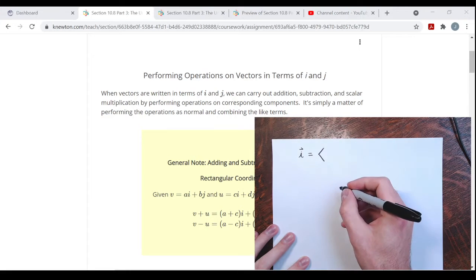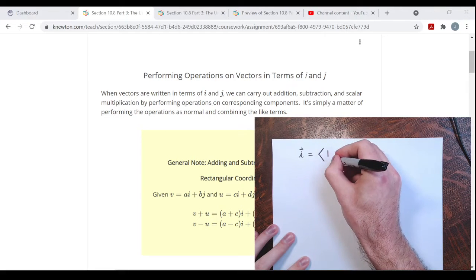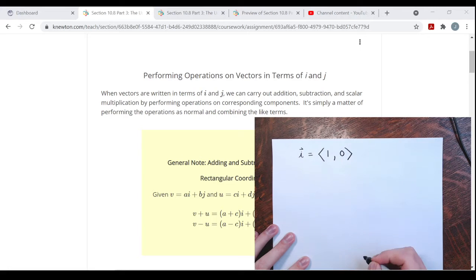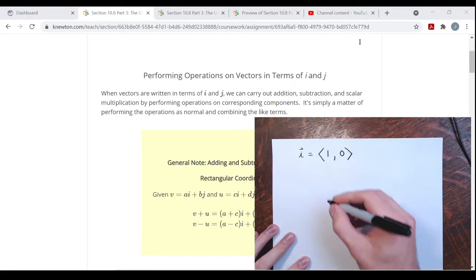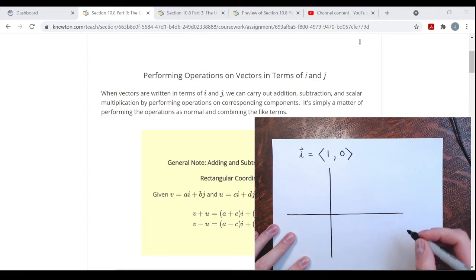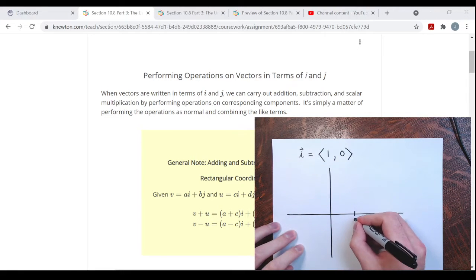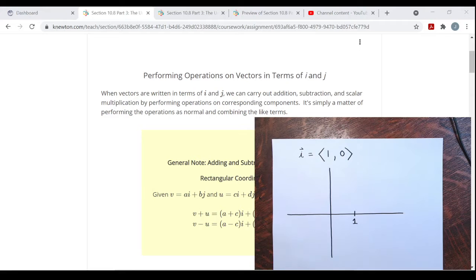On the coordinate plane, the vector i is one unit to the right. There's vector i, this vector here starting at the origin, moving right one unit. Simple enough.